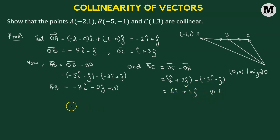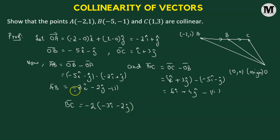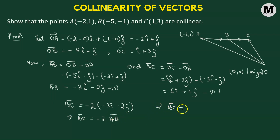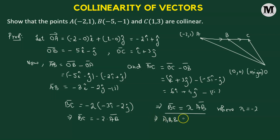Now we will rewrite BC vector. If we take negative two as a common factor from six i-cap plus four j-cap, we get negative two times the quantity negative three i-cap minus two j-cap. From equation one, we already showed that negative three i-cap minus two j-cap is vector AB. This implies that BC vector equals negative two times vector AB. In other words, BC vector equals some scalar lambda multiplied by AB vector, where lambda equals negative two. Whenever this criterion is met, it confirms that the points A, B, and C are collinear. So we have successfully proved the problem — points A, B, and C are collinear.